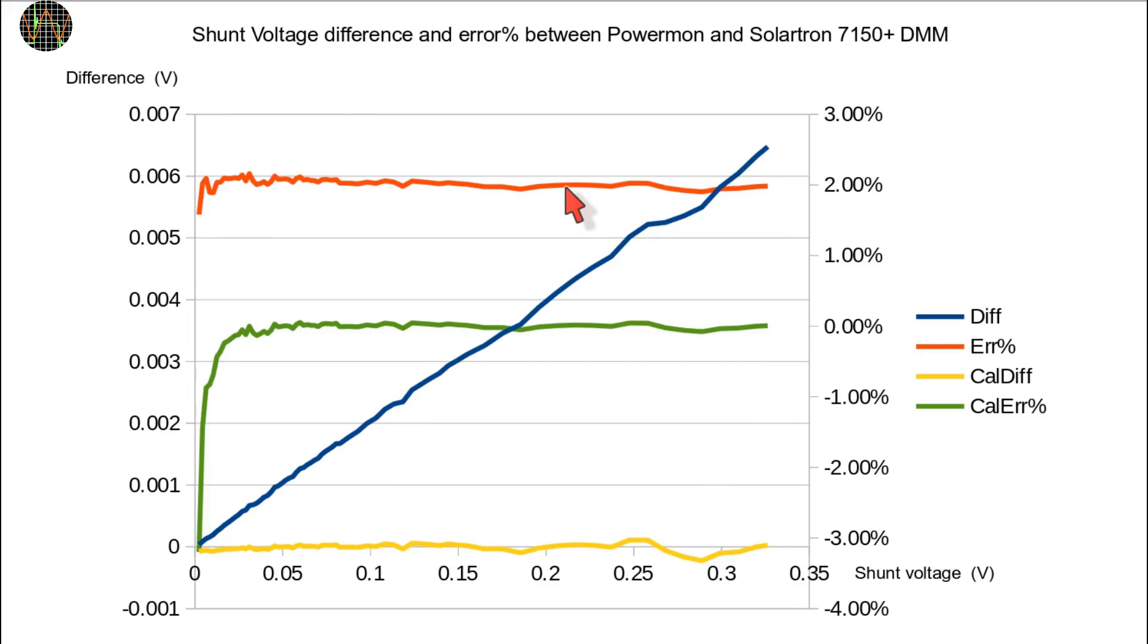Then I used the corrected value again to calculate the difference to the reference and the error. These new values are shown in yellow and green. You can see that the error is now very close to 0% and the difference hovers just around the 0 line.